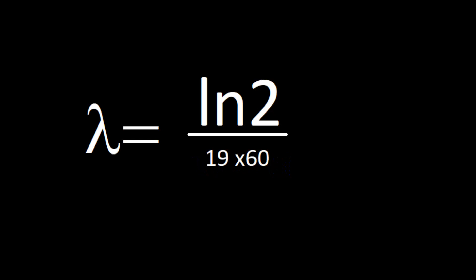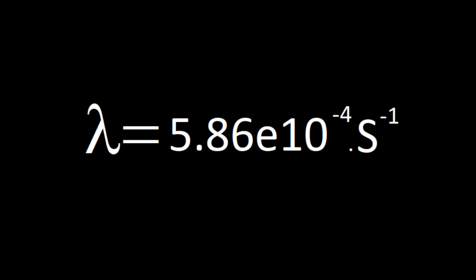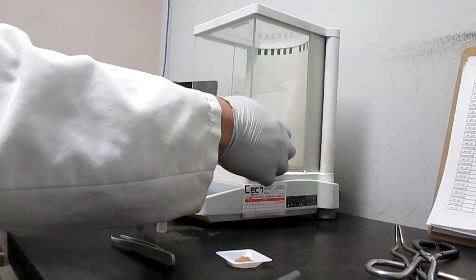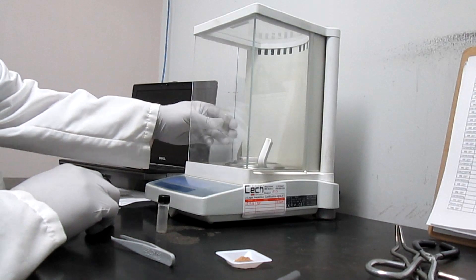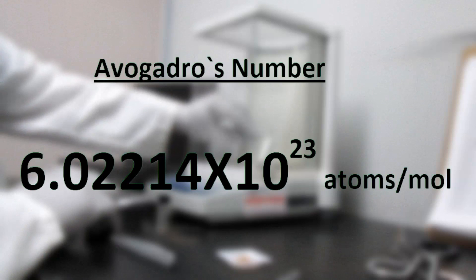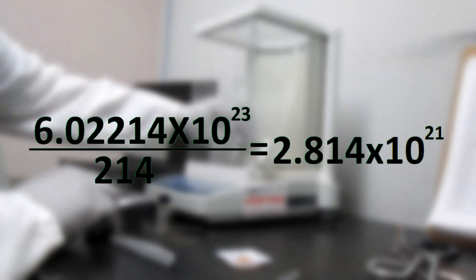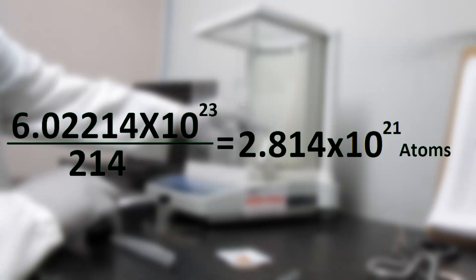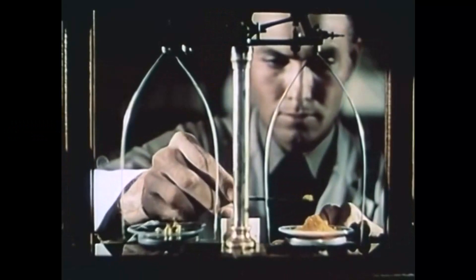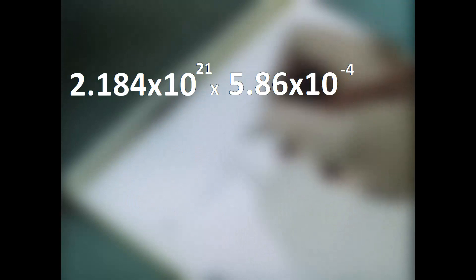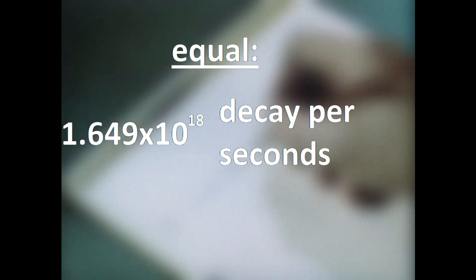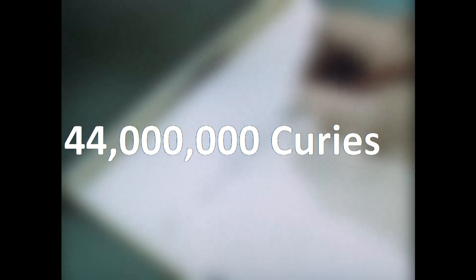Bismuth-214's lambda is 5.86 times 10 to the minus 4 seconds to the minus 1. We can calculate the specific activity of a single gram of bismuth-214 using Avogadro's number. First, how many atoms of bismuth-214 in 1 gram? That's 2.814 times 10 to the power of 21. Since they all have the same probability of decay at any time, the specific activity can be calculated, giving us 1.6 times 10 to the power of 18 decays per gram, or becquerel per gram.